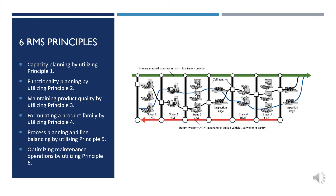Functionality planning utilizes principle two. In addition to capacity, system functionality is another critical factor in developing system reconfiguration policies. The RMS is designed according to principle two: design the manufacturing system for adaptation to the customer's new desires.